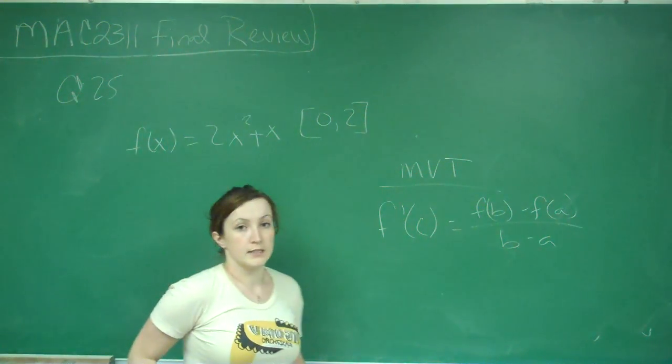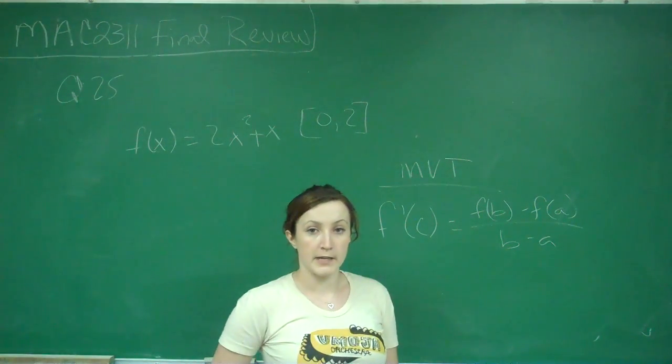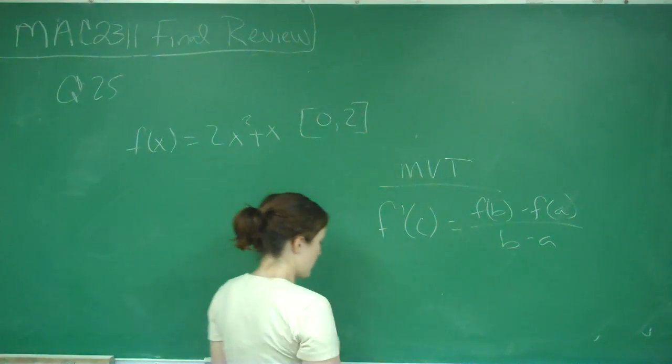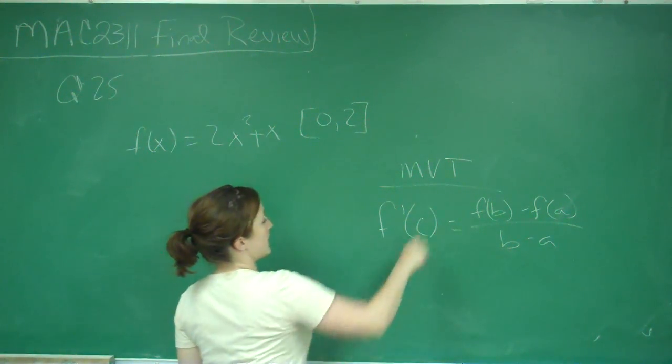And our mean value theorem says that there exists some value of C on the interval from A to B, where f prime of C is equal to f of B minus f of A all over B minus A. So what we're going to do is find that.